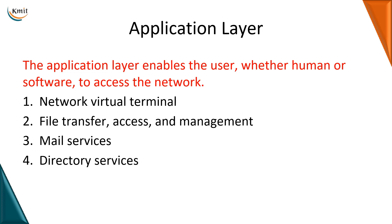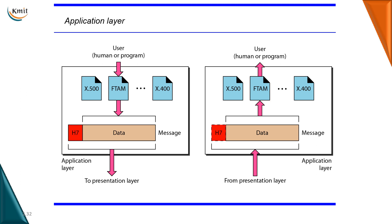The seventh layer — the application layer — enables users, whether human or software, to access the network and provides services to them. It provides a network virtual terminal using protocols like Telnet to log into remote hosts, FTP for file transfer and management, mail services for sending and receiving emails, and directory services. All these services are provided through higher-level protocols at the application layer, which has direct interaction with the user.